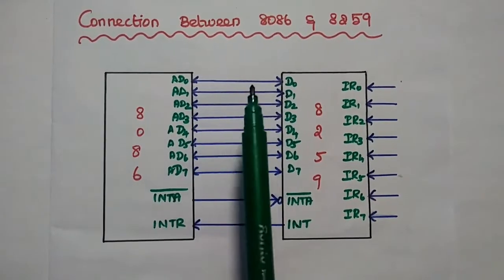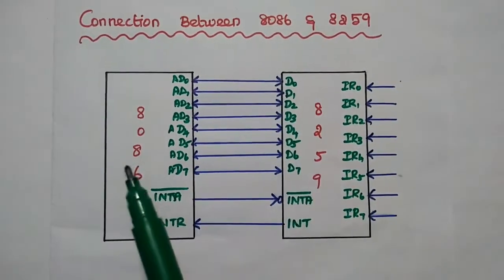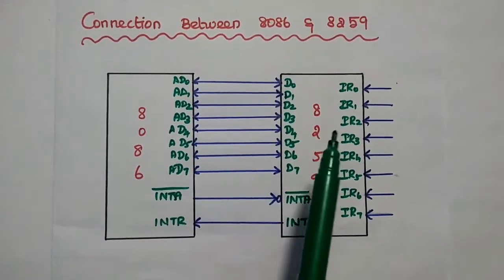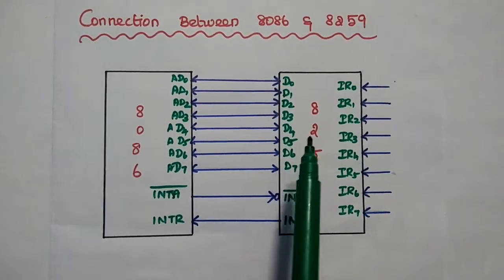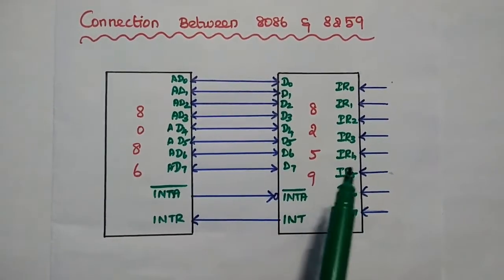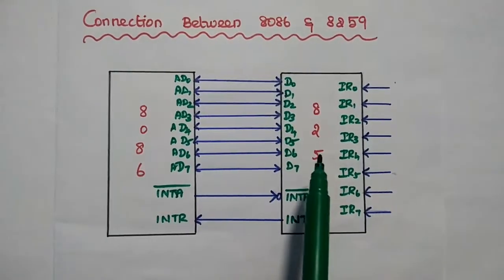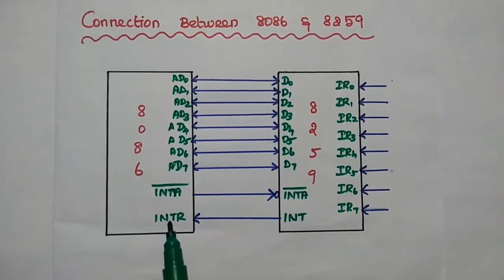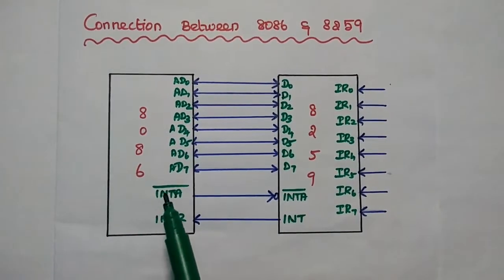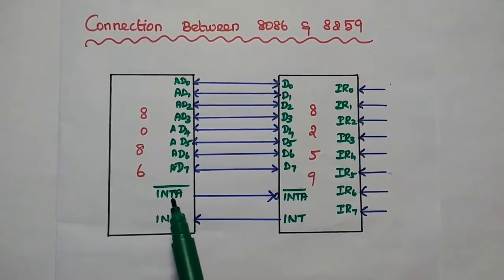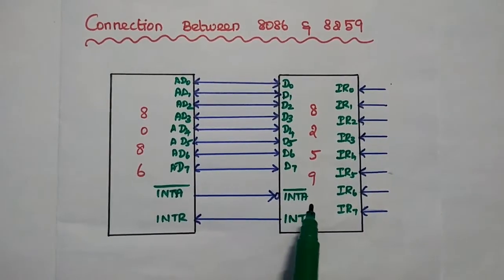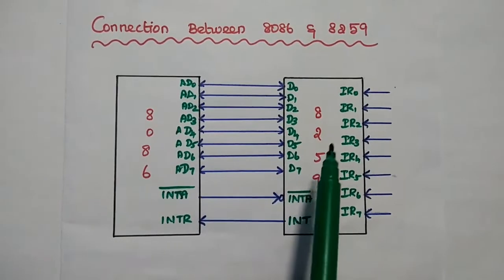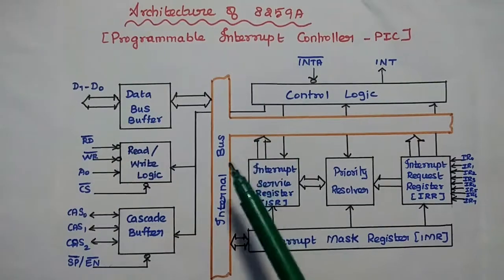Next, the connection between 8086 and 8259. The processor 8086 is connected with the 8259 through data lines. Whenever there is an interrupt request from the 8259, it sends the INT signal to the 8086. If the processor is ready to accept that interrupt, it sends the acknowledgement back to the 8259. This interrupt controller can control 8 interrupt requests.